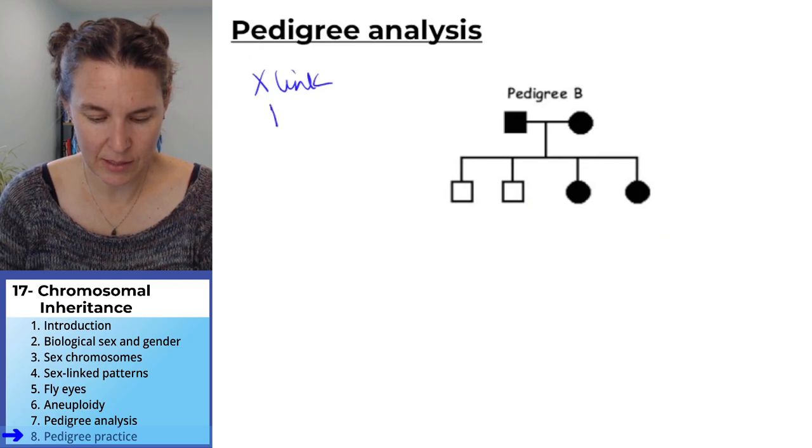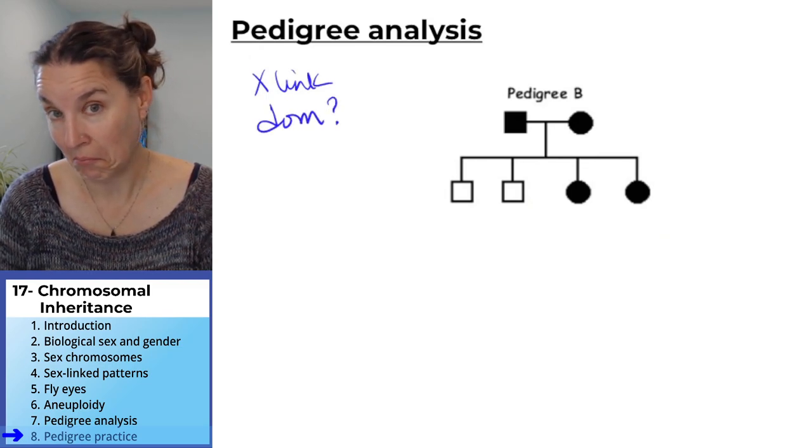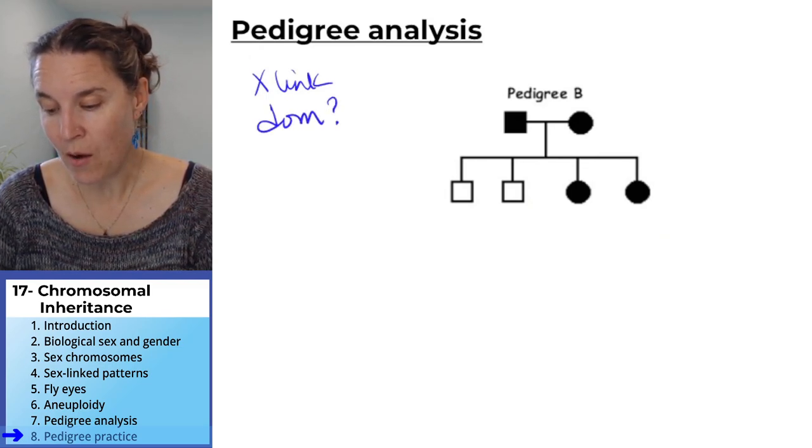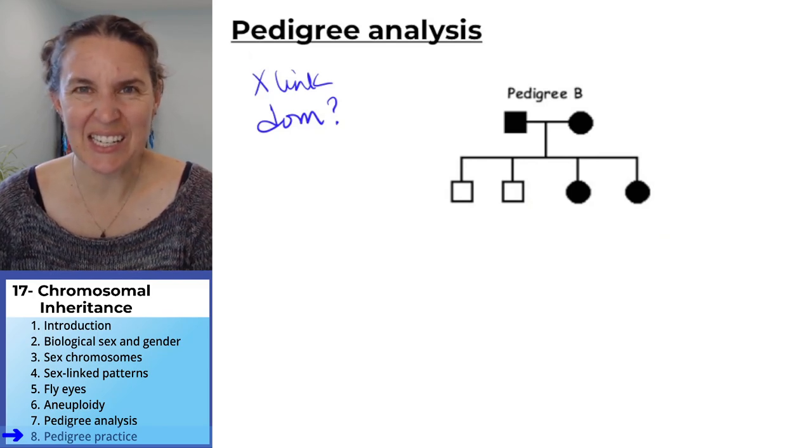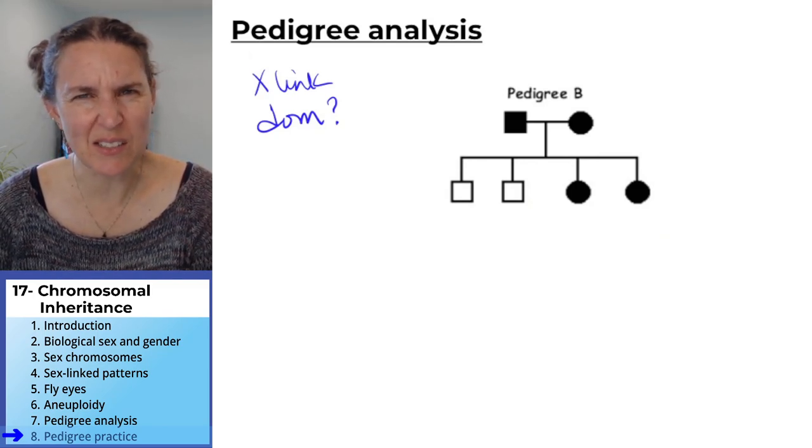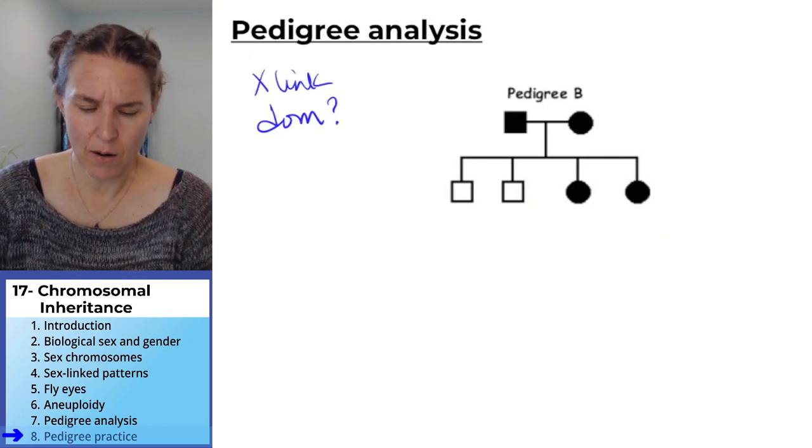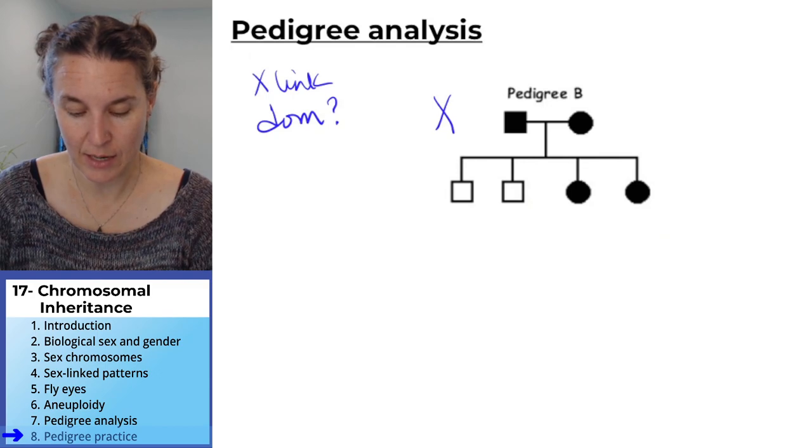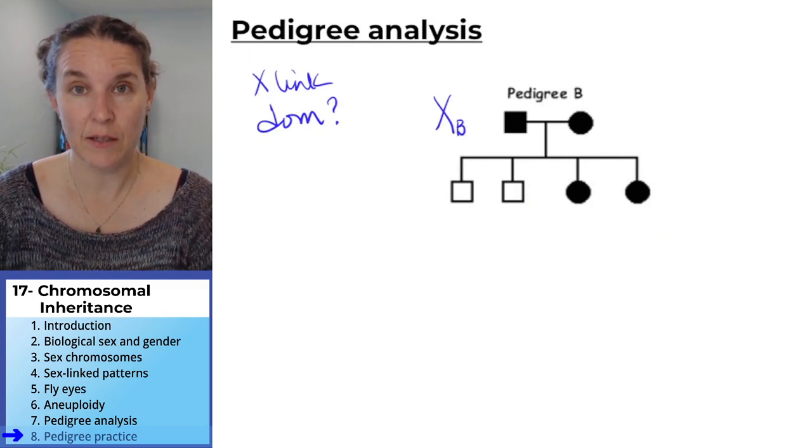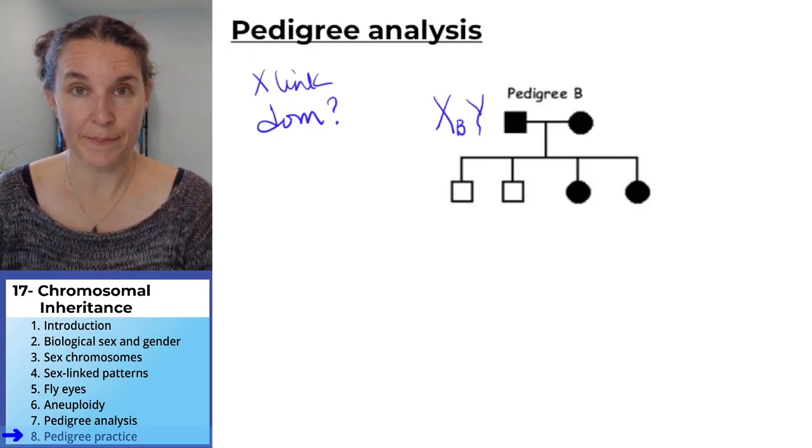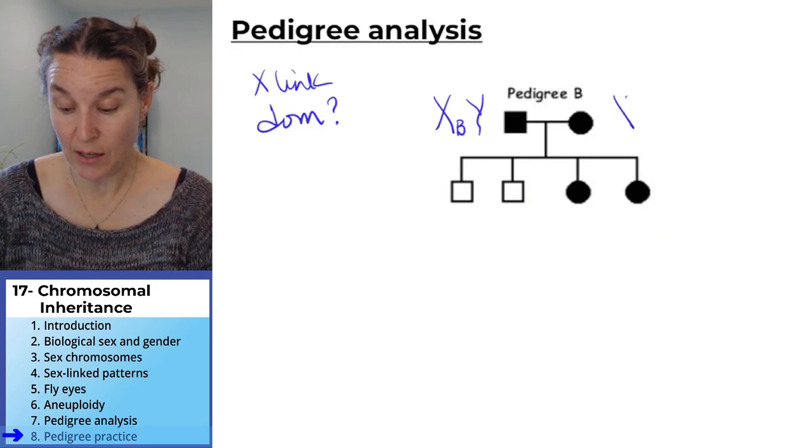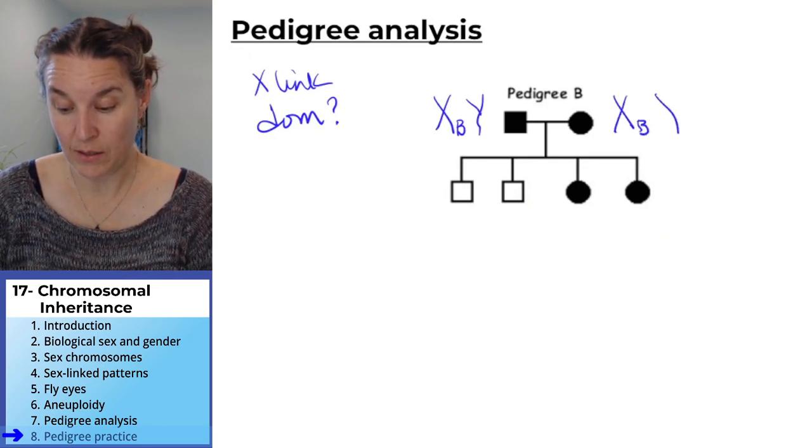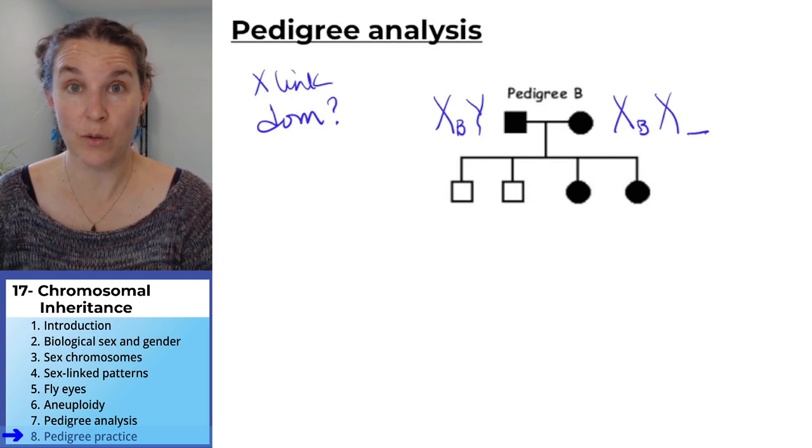X-linked dominant. You see how this isn't easy, but it's kind of like a puzzle. Alright, if it's X-linked dominant, then this guy has to have it and he also has to have a Y. She needs one copy of it, an X chromosome with who knows what else.